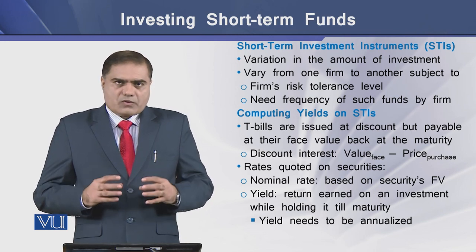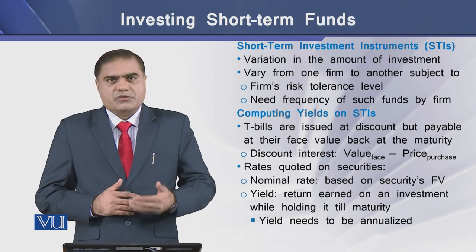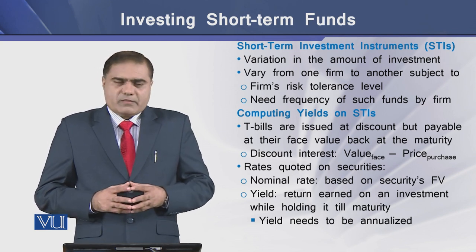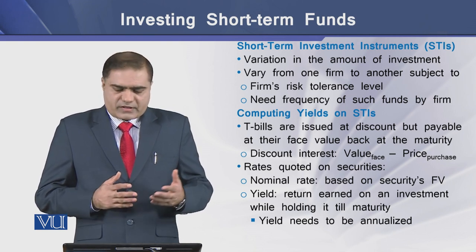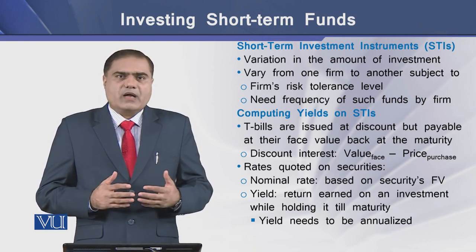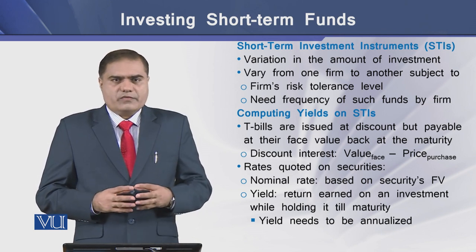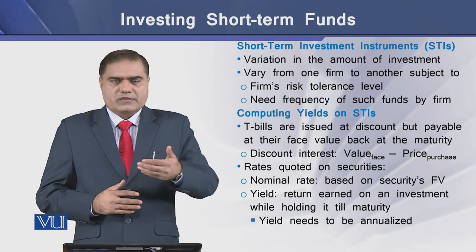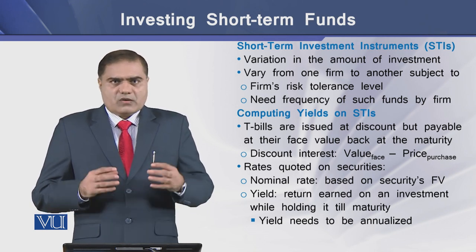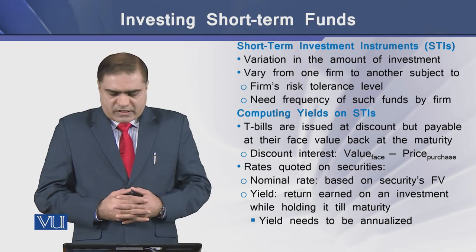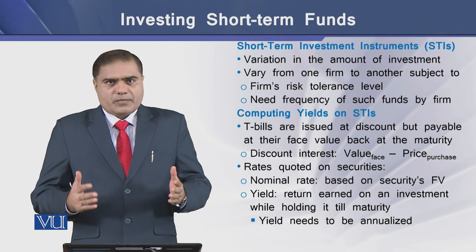How do we compute yields on short-term investment instruments? T-bills are issued at a discount but payable at their face value at the time of maturity. This gives rise to the concept of discount interest as a yield, which is basically the difference between the face value and the purchase price.